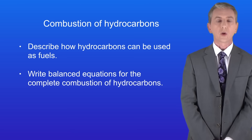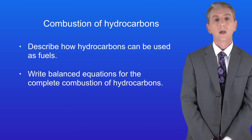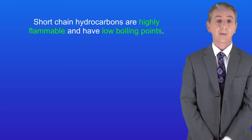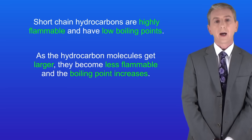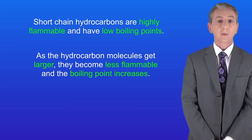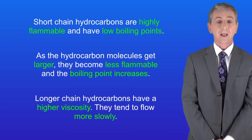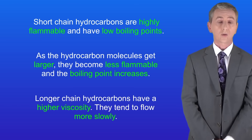In the last video we looked at how the properties of hydrocarbons depend on the size of the molecule. We saw that short chain hydrocarbons are highly flammable and they have low boiling points. As the hydrocarbon molecules get larger they become less flammable and the boiling point increases. Also longer chain hydrocarbons have a higher viscosity, in other words they tend to flow more slowly.